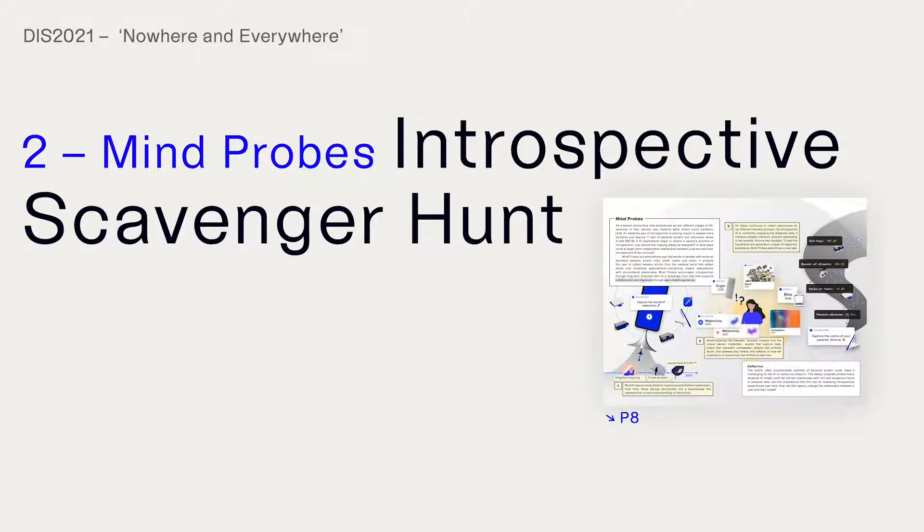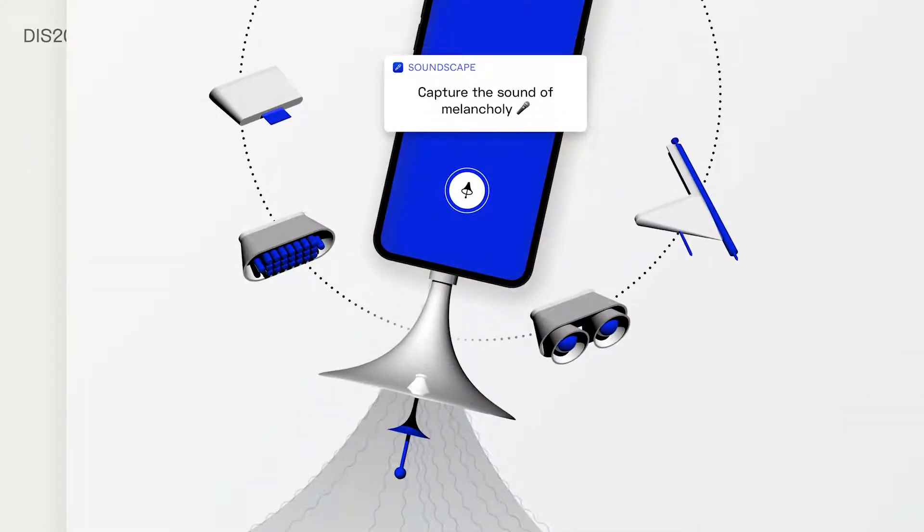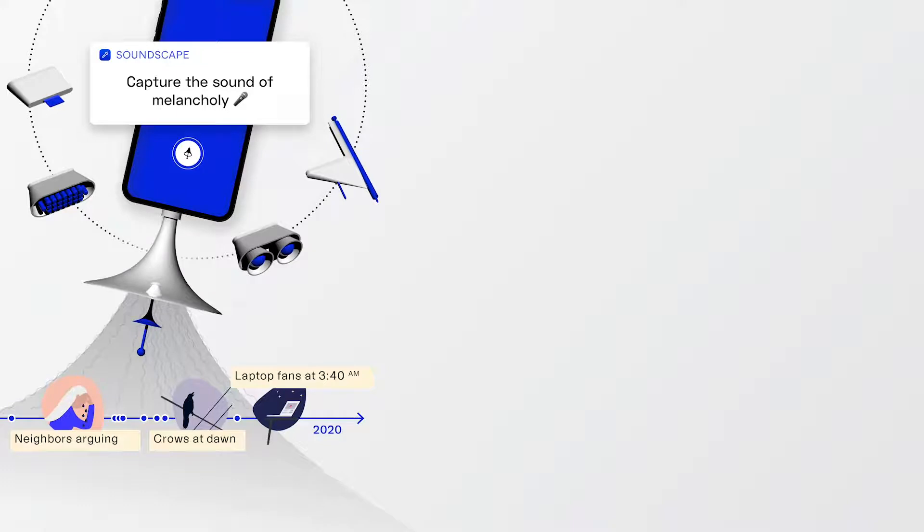In our second proposal, Mindprobes investigates how a longer-term collaborative relationship between a person and their introspective AI could be nurtured. How should we design for ongoing dialogues with systems that make inferences about us? It's a smartphone app that works in tandem with external hardware sensors: sound, color, smell, haptic and vision. It prompts the user to collect sensory stimuli from the material world that reflects social and emotional associations.